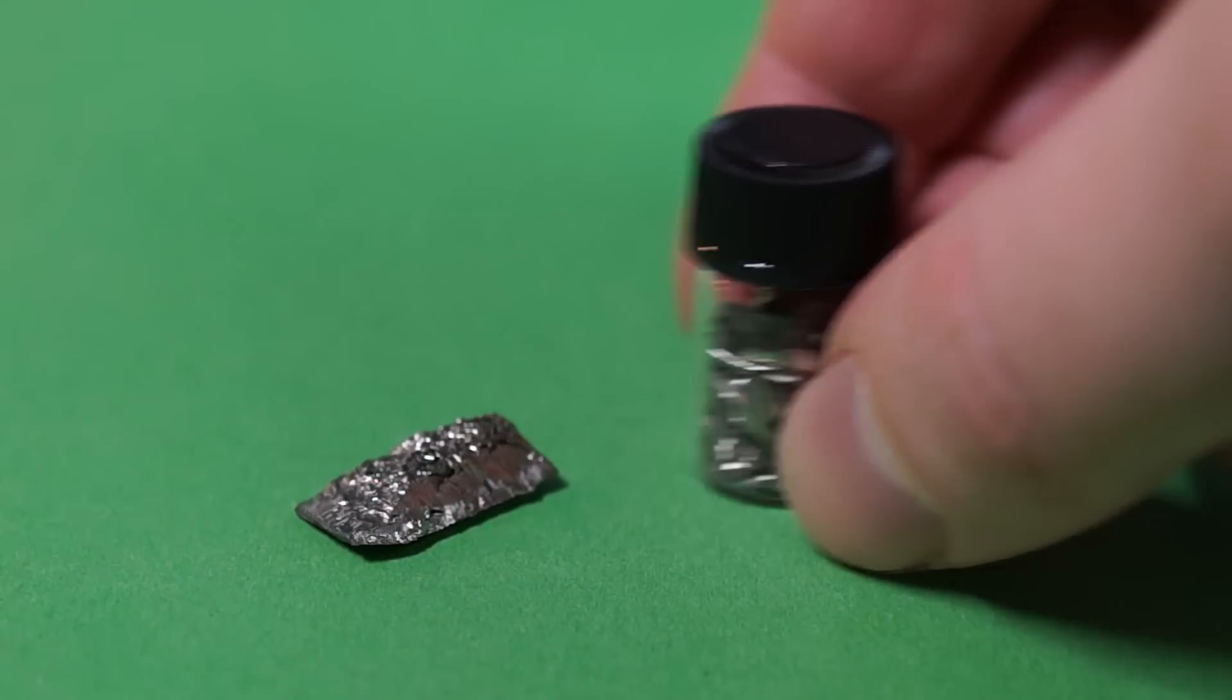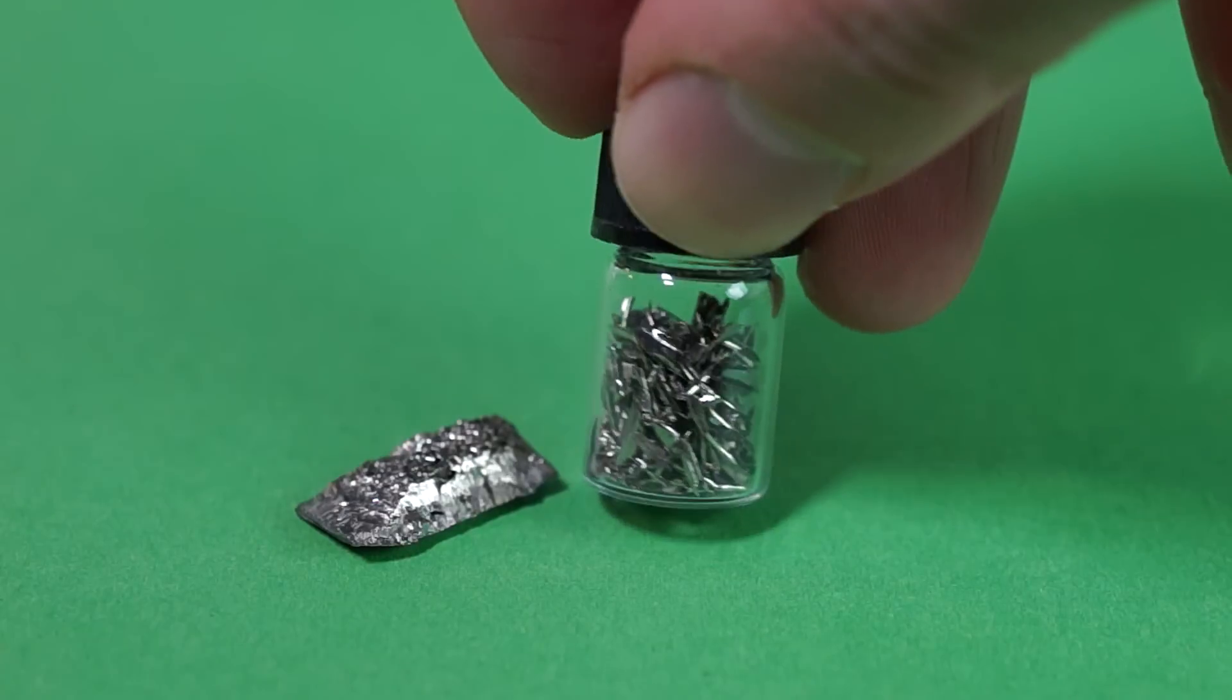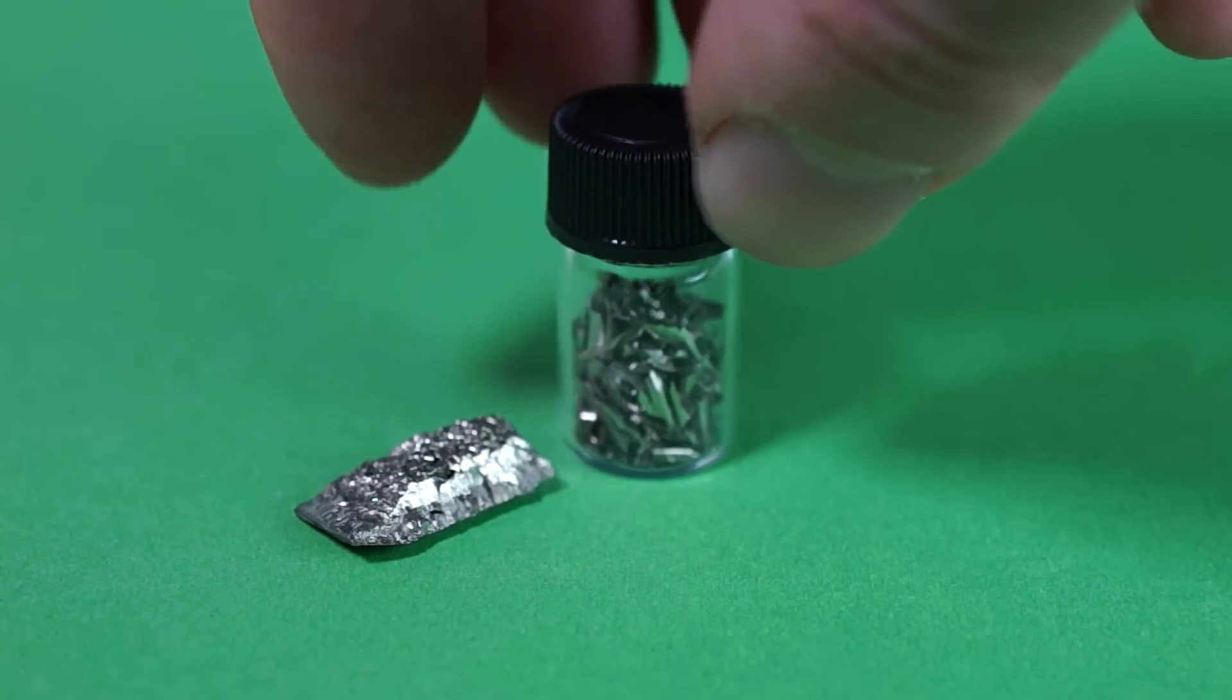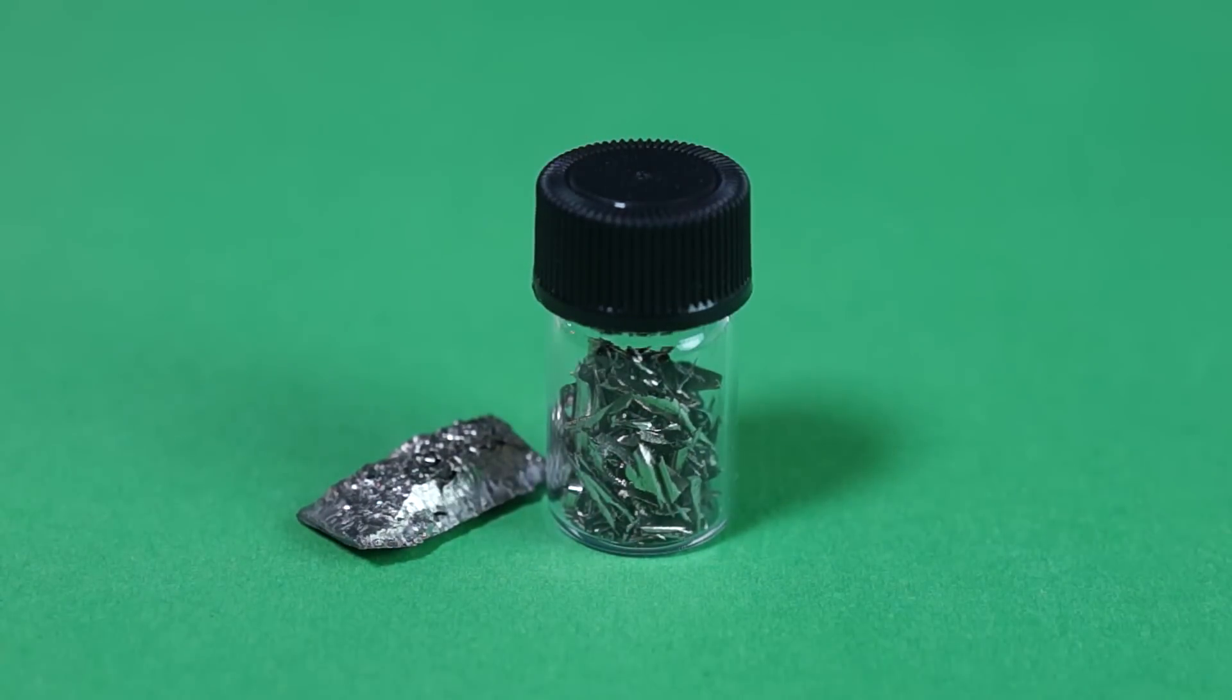Its density is about 3 grams per cubic centimeter, only 10% more than that of aluminum. However, the melting point of scandium is much higher.